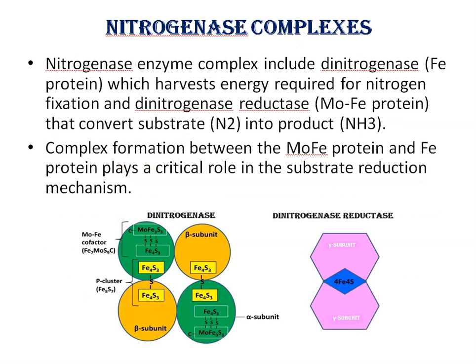Nitrogenase enzyme complex is made up of two components: iron protein and molybdenum-iron protein, also known as dinitrogenase and dinitrogenase reductase. The dinitrogenase part (iron protein) harvests the energy required for nitrogen fixation, while the dinitrogenase reductase part (molybdenum-iron protein) converts nitrogen into ammonia. This complex formation between molybdenum-iron protein and iron protein plays a critical role in the substrate reduction mechanism.